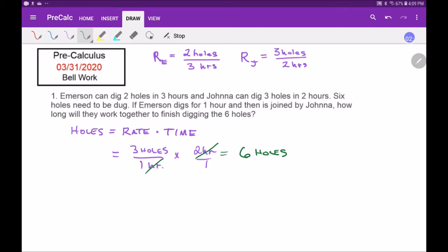So if it was just one rate I'd know it would take two hours if somebody dug that fast, which nobody's digging that fast apparently. So anyway, what we're going to do here is we're going to say we know that there has to be six holes, and that's going to equal Emerson's rate times one hour, so I'm going to say r sub e times time sub one.